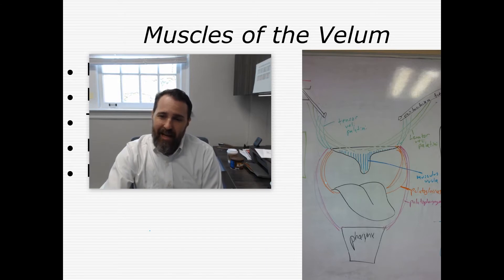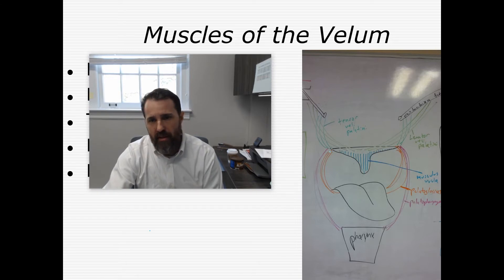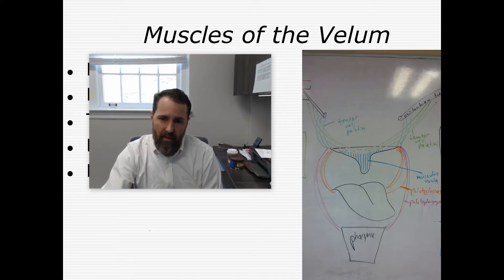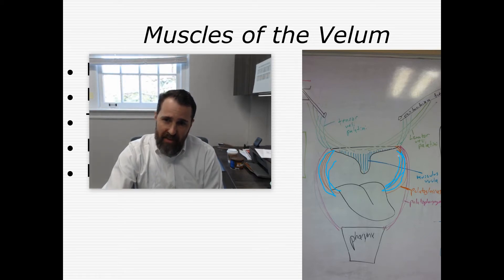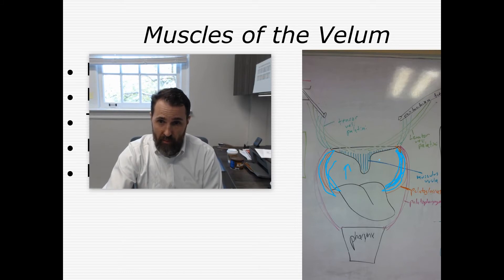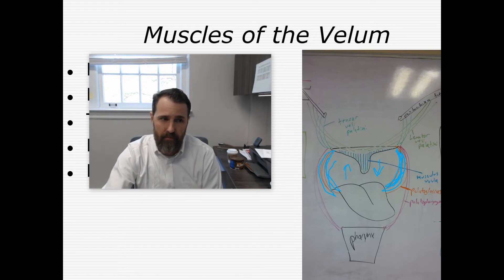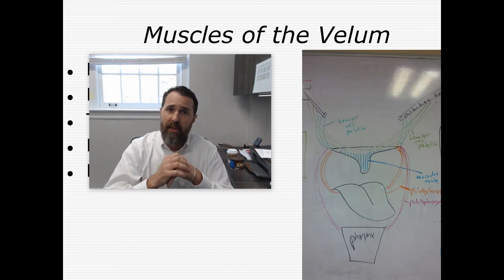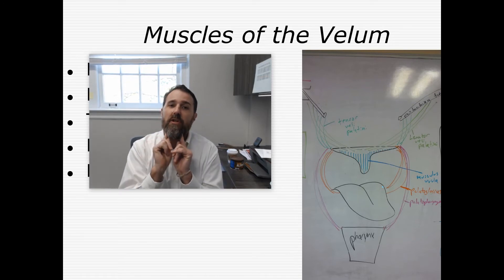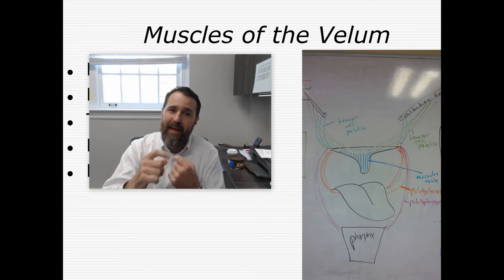The next muscle is the palatoglossus, which was already mentioned in the muscles of the tongue section. The palatoglossus is the muscle that runs from the tongue up to the soft palate. This muscle is going to either elevate the tongue or depress the velum — depress the soft palate. The palatoglossus forms the anterior faucial pillars; when you look in someone's mouth and see that band of tissue, that is the palatoglossus.